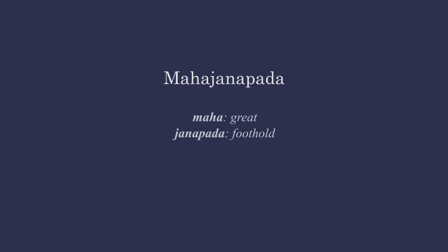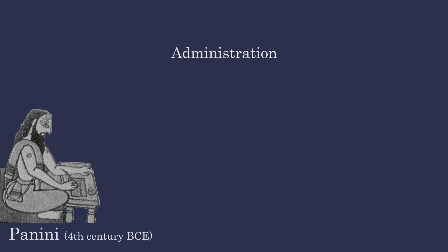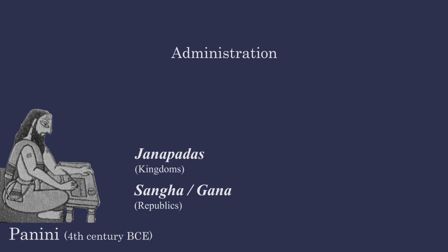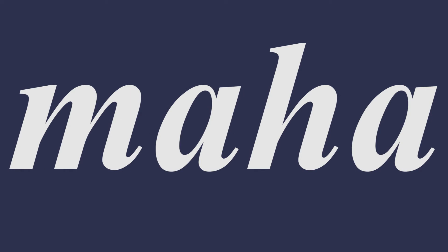Now let's talk about the Mahajanapadas. These states were formed slowly and over a prolonged period of time, but at least by the 6th century BCE these 16 states had taken their final form. The main sources that tell us about these states are Buddhist and Jain texts which were contemporary to the Mahajanapadas. Panini, who was a linguist and grammarian of this period, classified these great states into two types. There were also many other states at that time apart from the main 16, but only the most prominent ones were given the prefix of Maha.